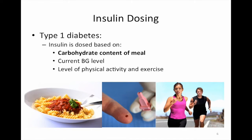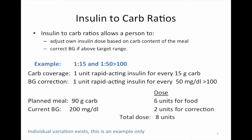The dose is based on three things: the amount of carbohydrate and the type they're about to eat, what their current blood sugar level is, and their level of physical activity. When using insulin-to-carbohydrate ratios, the person would be given — with the help of an endocrinologist or doctor — a ratio that gives information on how to cover the carbohydrate but also how to correct an elevated blood glucose.